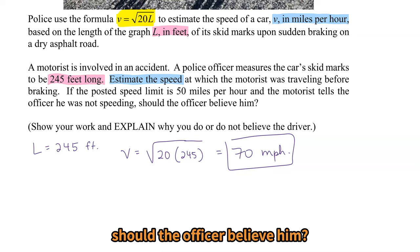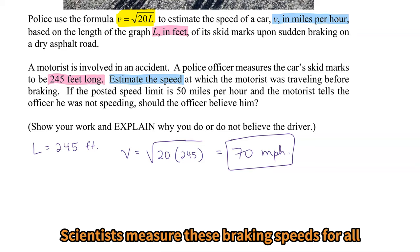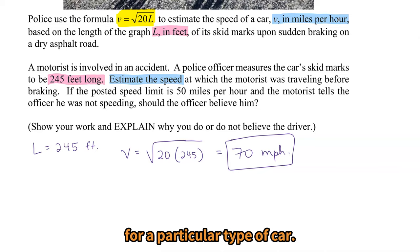Scientists measure these braking speeds for all different kinds of cars. So this particular formula is for a particular type of car. We would have different formulas for different types of cars because that skid mark length is going to be based on a lot of different factors.